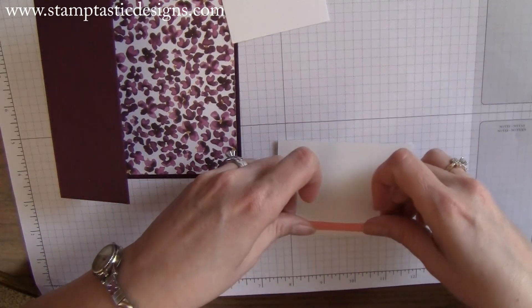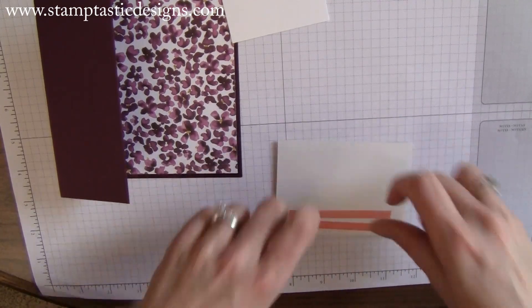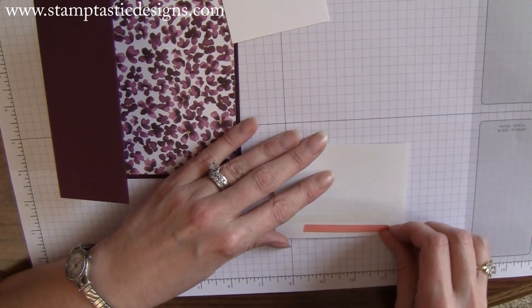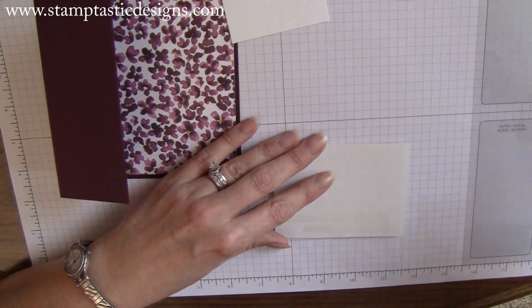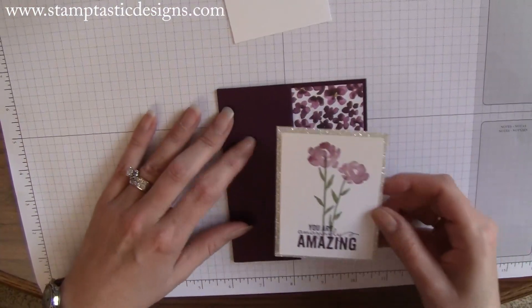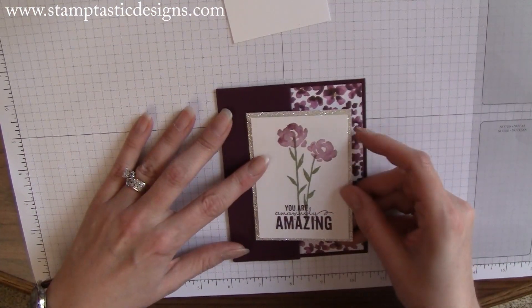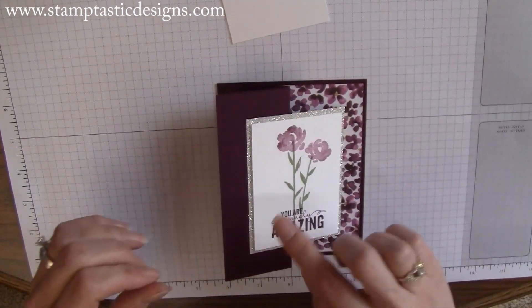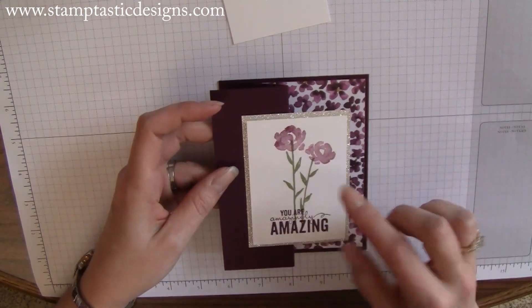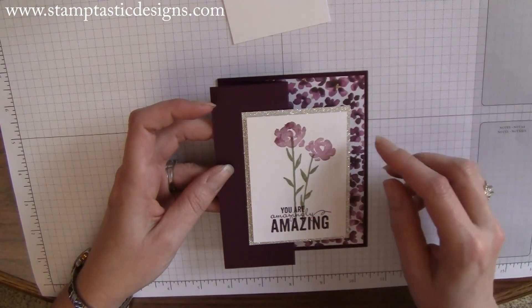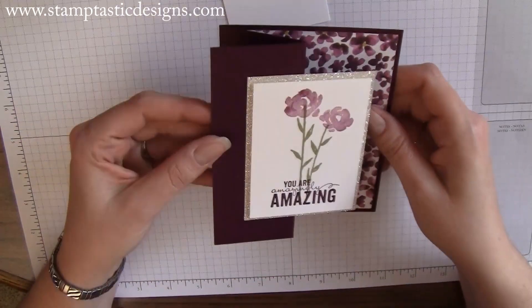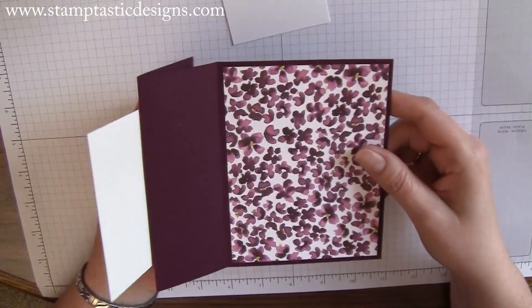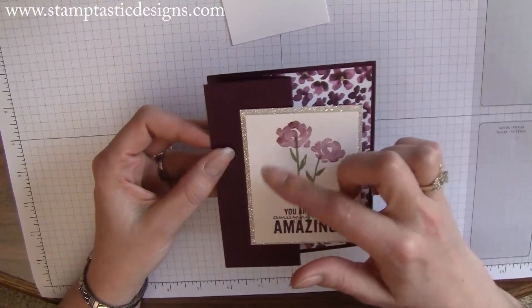Once you get your sticky strip on here, peel off the backing and adhere it right to the card. I use sticky strip because it's a stronger adhesive. You can use snail adhesive, but since it's a fancy fold card and people like to play with them, you want stronger adhesive so it stays attached to your card.